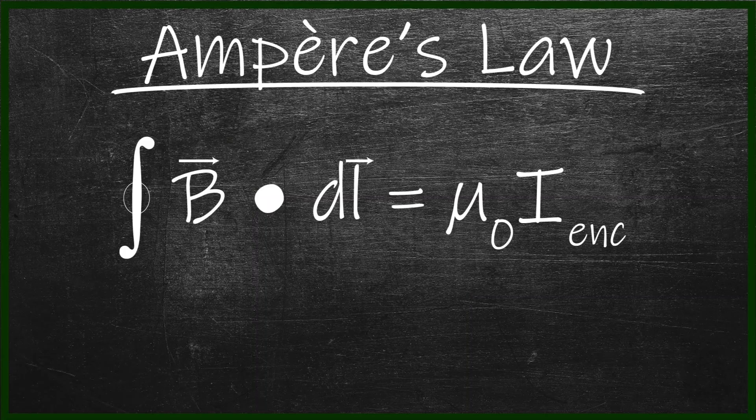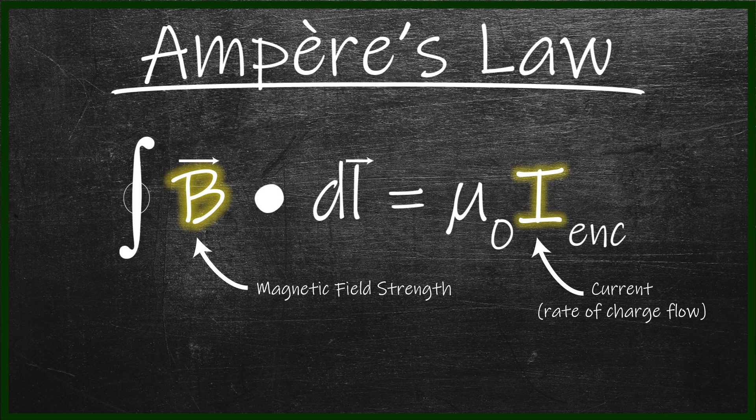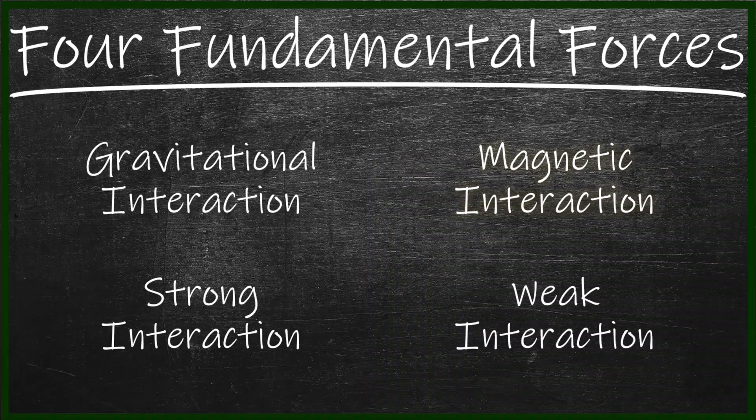This can be mathematically represented using Ampere's law, where B is the magnetic field and I is the current, or the rate of flow of charge. A magnetic field is simply a representation of where the magnetic force — one of the four fundamental forces in the universe — acts.